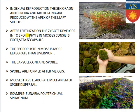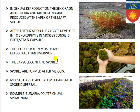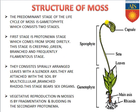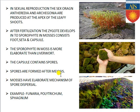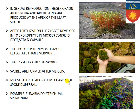The sporophyte in moss is more elaborate than in liverwort. The capsule contains spores formed after meiosis — the spore sac is diploid (2N) and spores are haploid. Mosses have an elaborate mechanism of spore dispersal. Examples of mosses are Funaria, Polytrichum, and Sphagnum.